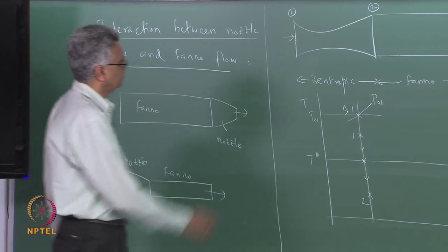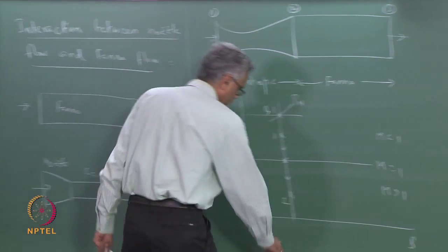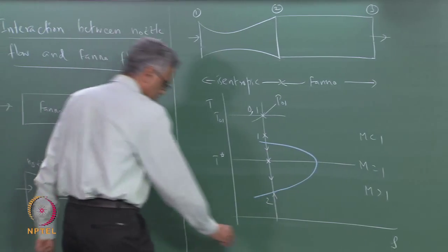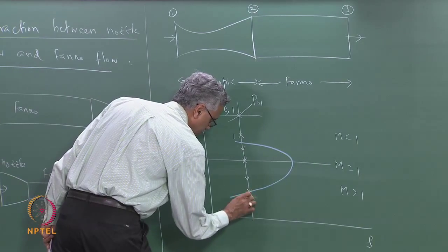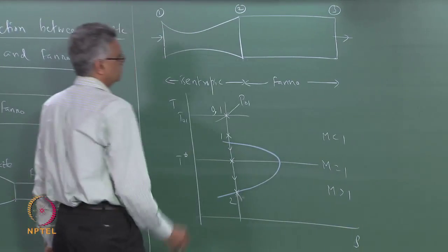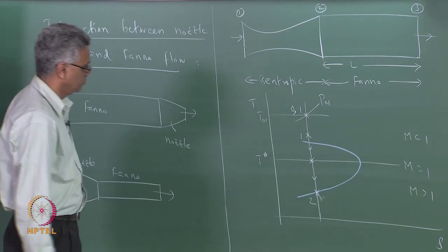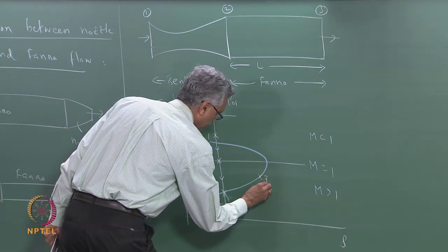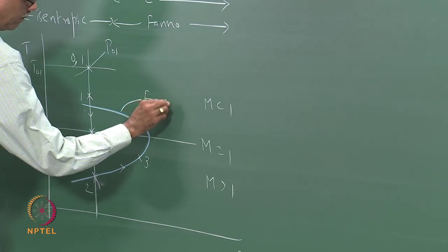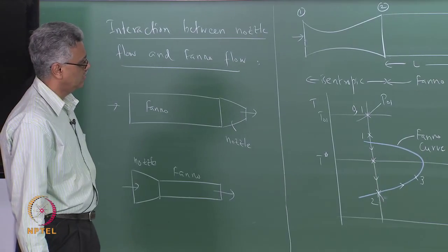After the isentropic expansion, we have a Fanno process. The Fanno curve for the given mass flow rate passes through state 2. If the length of the duct L is less than L* corresponding to Mach number M2, then state 3 may lie somewhere on the supersonic branch of the Fanno curve, and the flow proceeds from state 2 to state 3 along the Fanno curve.